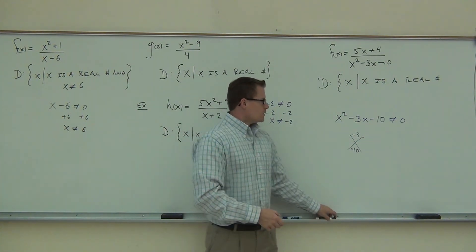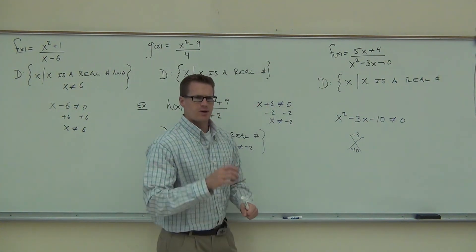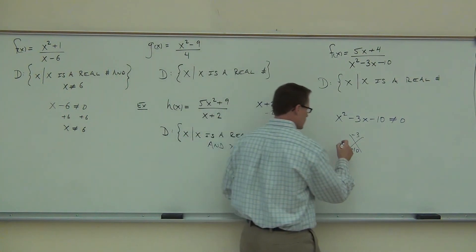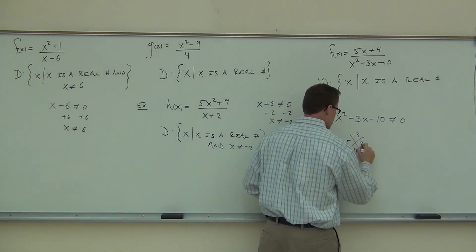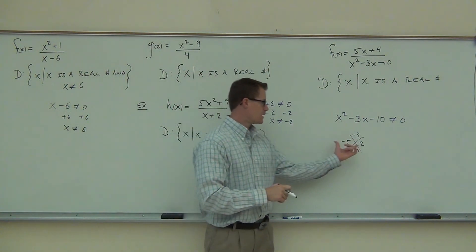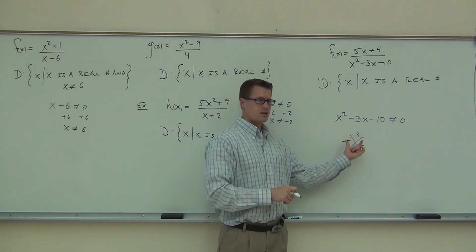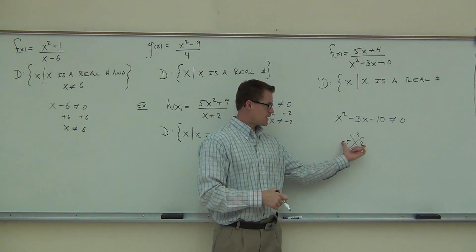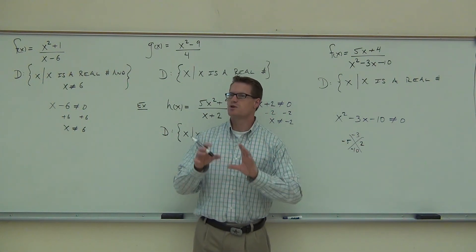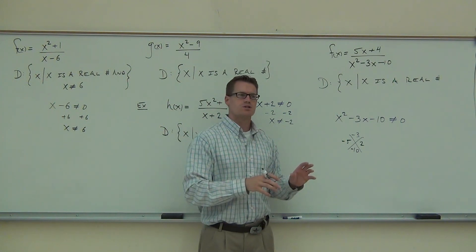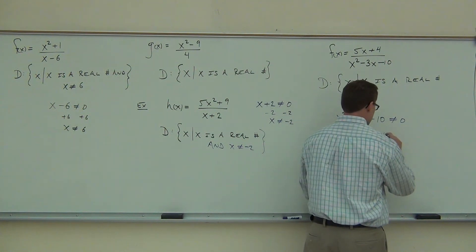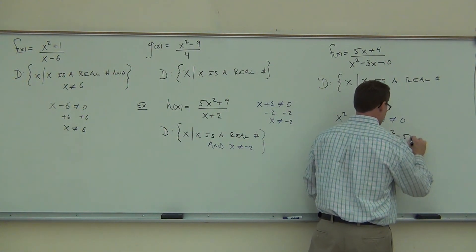After you find these numbers — negative five and two — double check: negative five plus two is negative three, and negative five times two is negative ten. Yeah, that works. So those are the right numbers. Here's the extra step versus the not extra step: some of you are still doing x squared minus five x plus two x minus ten when you don't need to. If there's no leading coefficient, go straight to your factors.